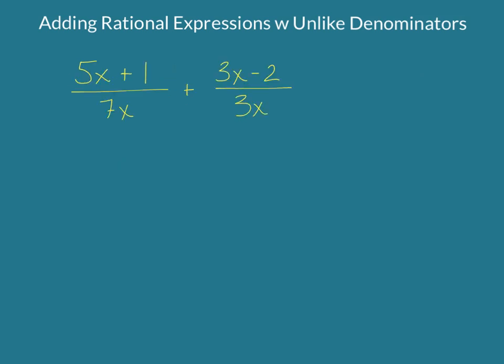In this next example, we have unlike denominators, but it's a little more complex. We see that our two denominators are 7x and 3x. So we want to find the LCD. So we first want to think, what is the least common factor between 7 and 3? In that case, it's their product, 21. And then the least common factor between x and x is not its product, it's not x squared. It's actually just x, because they have x in common.